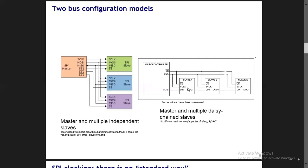The first slave to receive data directly from the master is slave 1. Slave 1 then transfers data to the next slave in the queue, slave 2 transfers it to slave 3, and so on. When it comes to time, slave 2 will need more time to get the same amount of data compared to slave 1, and of course the further we go from the master, the time becomes larger and larger.